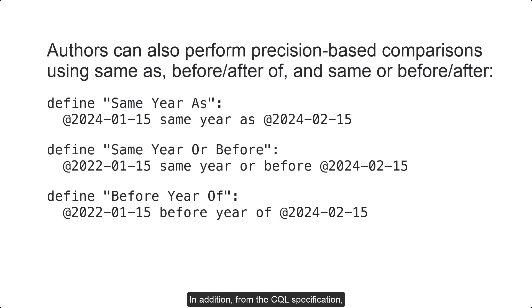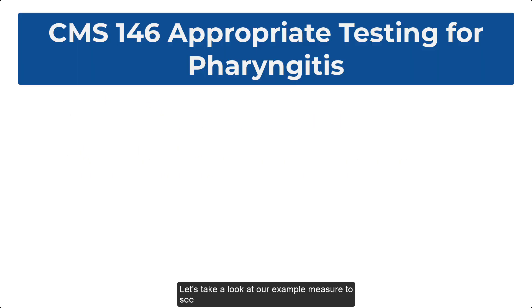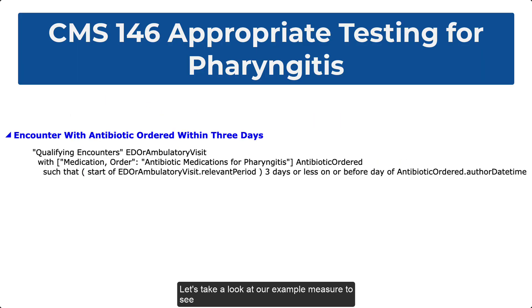In addition, from the CQL specification, we learn that authors can perform precision-based comparisons using same as, before, after, of, and same or before, after. Let's take a look at our example measure to see how some of these comparisons are used.